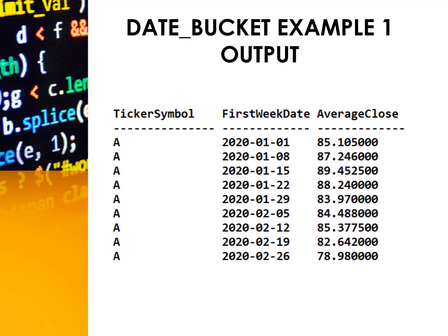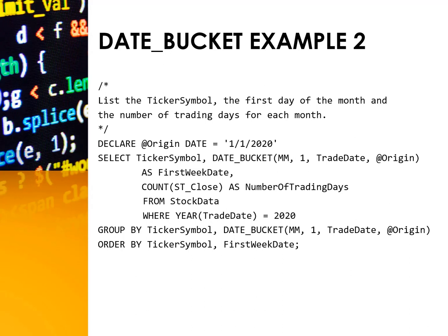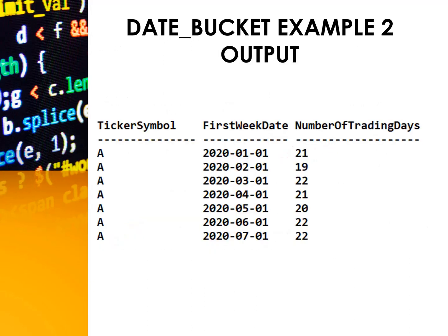That is the exact thing that I needed. Do you have another example? Sure! Let's say we want to list the first day of the month and the number of trading days for each month. We define the date bucket to be of type month right here, and the first day of the year is the starting point, and the number of months is 1. We will order it by ticker symbol and the date to see the number of trading days in each month. Here then is the output.